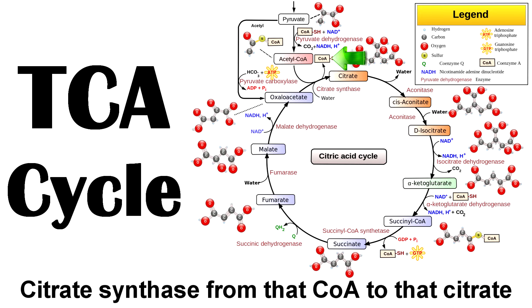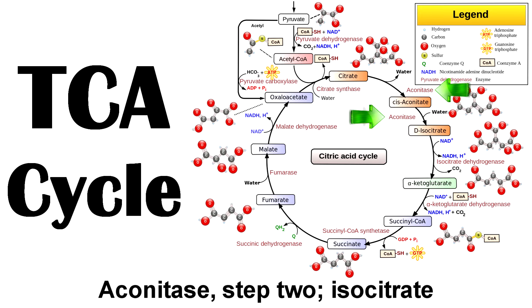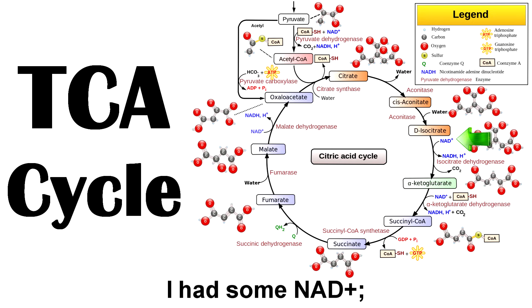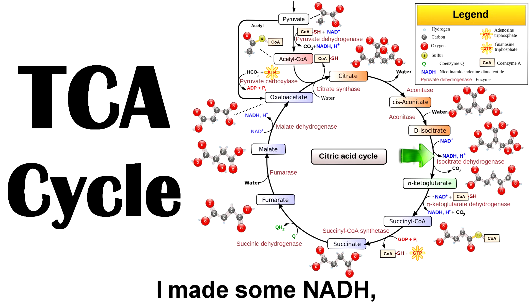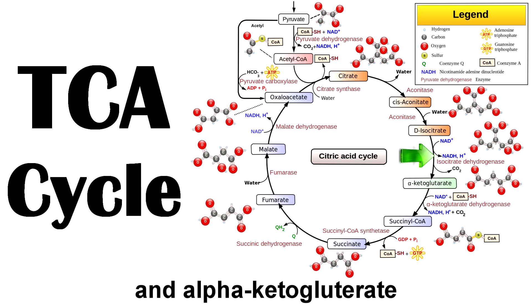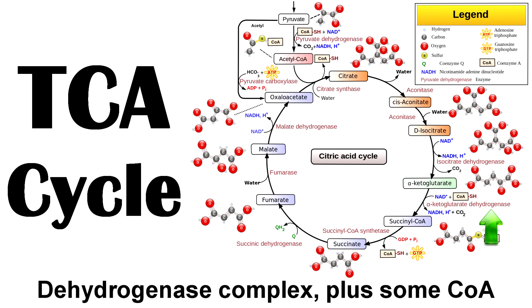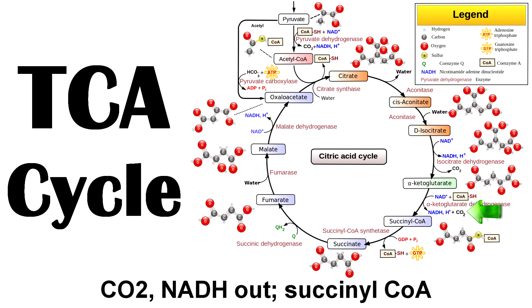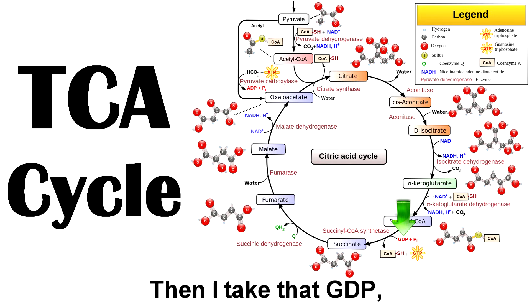Citrate synthase from that CoA to that citrate. Aconitase, step 2, isocitrate. I had some NAD+, I used some NAD+, I made some NADH. And alpha-ketoglutarate dehydrogenase complex, put some CoA, CO2, NADH out. Succinyl-CoA.